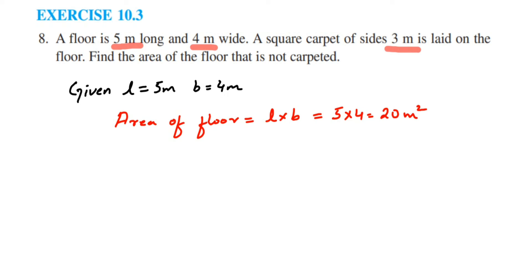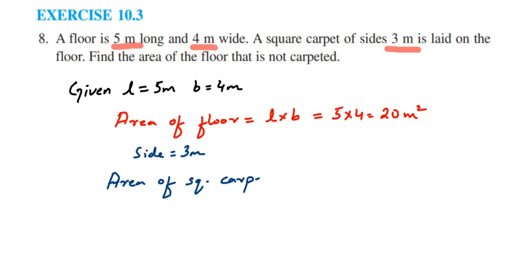Now we will find out the area of the square carpet. Here we know side is equal to 3 meters. Area of square carpet equals side squared, which is 3 squared, equal to 9 meter square.